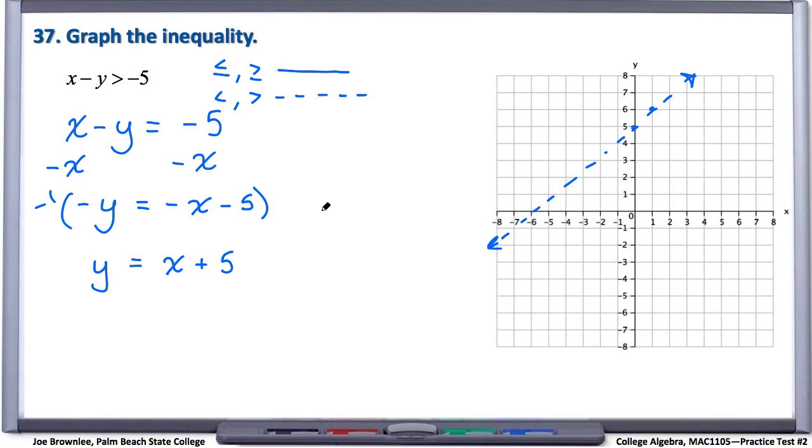And now our last step is to determine which side of this line we want to shade on. And to do that, we're going to choose a test point. And you can choose any point for your test point, so long as the point doesn't lie on the graph itself.